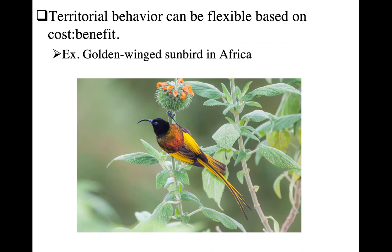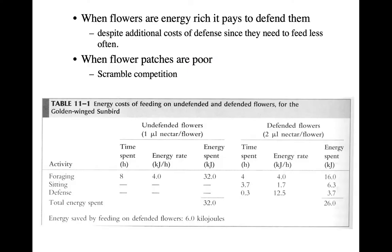In some species territorial behavior can be flexible, based on assessment of the cost-benefit ratio. An example is the golden-winged sunbird in Africa — a nectivorous bird similar in behavior to hummingbirds in the New World. In an experimental study, when flowers were energy-rich it actually paid to defend them, and so you saw territoriality, despite the fact that territorial defense costs a lot of energy for these birds. If flower patches were pretty poor, they opted for scramble competition because they didn't have the time or energy to defend resources that weren't very worthwhile anyway.